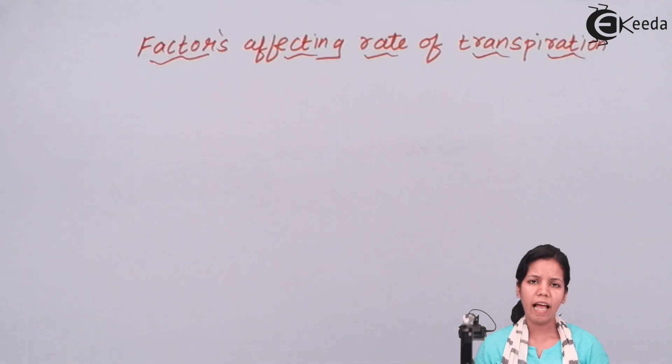Age of the plants. As the plants grow older and older, the opening and closing of stomata becomes slower. The mechanism becomes slower which can hamper the process of transpiration.